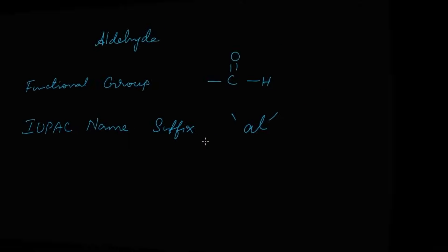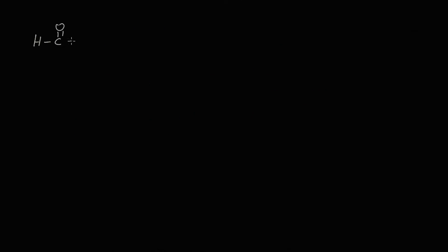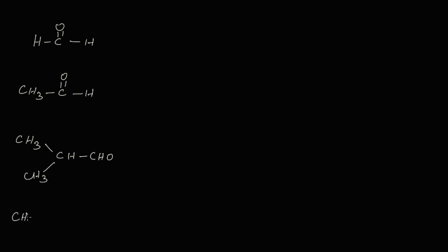Let's learn so many examples in aldehyde in detail. The first aldehyde is H-C double bond O-H. The second is CH₃-C double bond O-H. The third is a branched one: CH₃-CH with CHO. The fourth is CH₃-CH₂-CH₂-CH₂-CH₂-CHO.